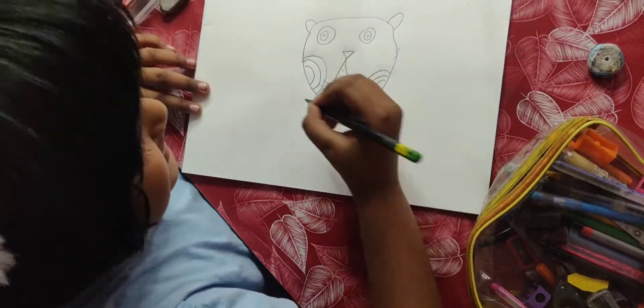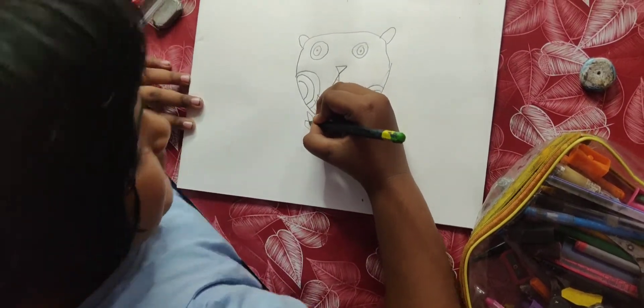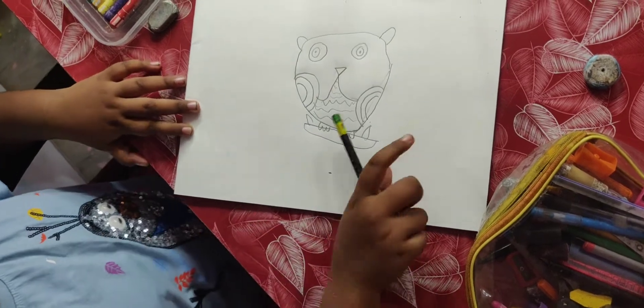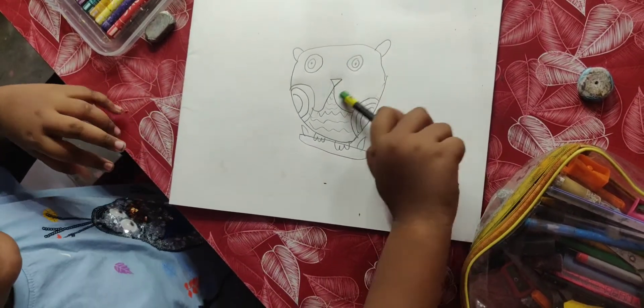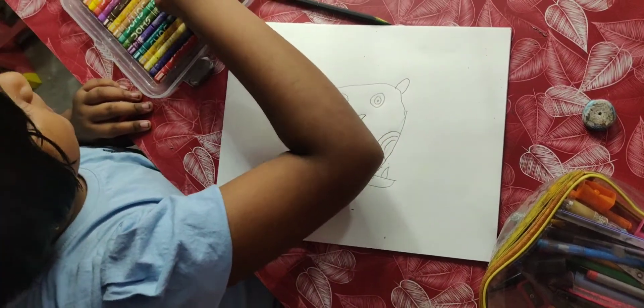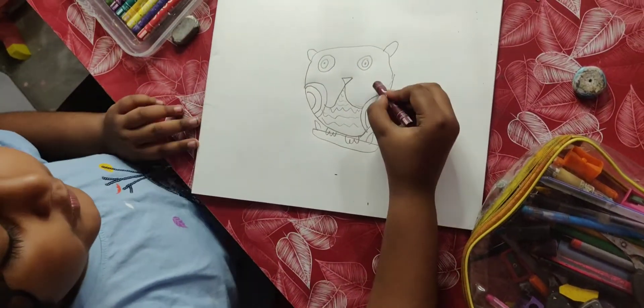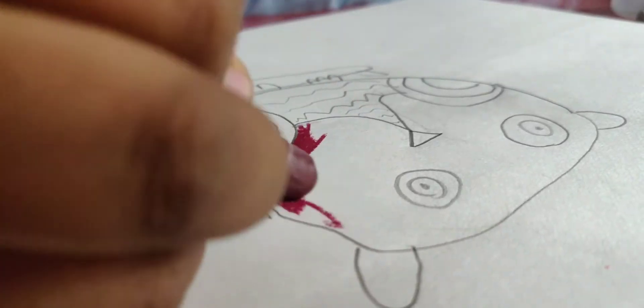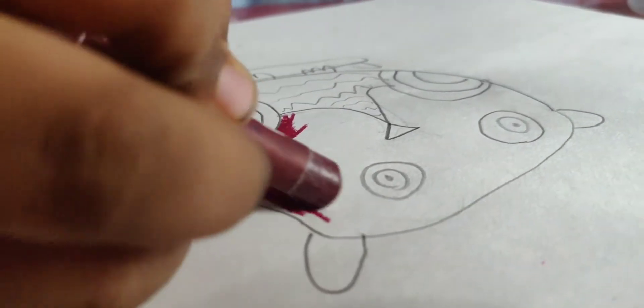Oh smart, yes. Like this. Then we need to color brown color over here. Let's do the brown color. Then we need to color the picture.